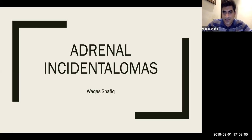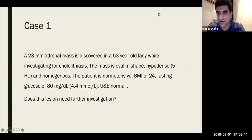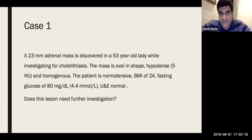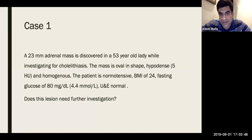Thank you very much. My talk today is on adrenal incidentaloma. I want to ask two questions we can work on, then discuss later. Case 1: a 23mm adrenal mass discovered in a 53-year-old lady while investigating for polylithiasis. The mass is oval, hypodense, density 5 Hounsfield units, homogeneous. Patient is normotensive, BMI 24, fasting glucose 80 mg/dL (4.4 mmol/L), urea, electrolytes, and creatinine normal.